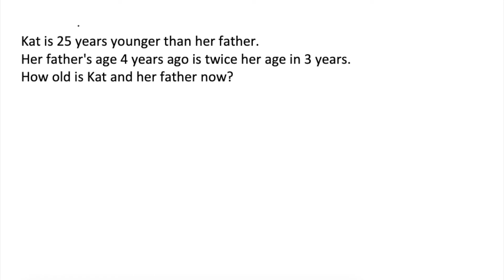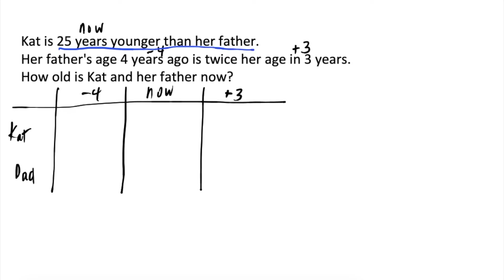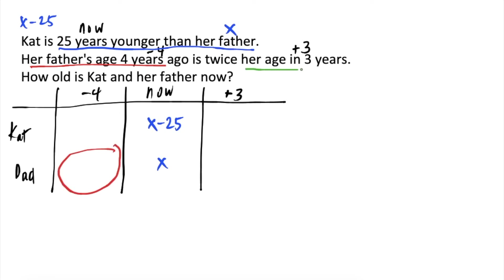Kat is 25 years younger than her father. Her father's age 4 years ago is twice her age in 3 years. How old is Kat and her father now? So, concerned tayo sa present age nilang dalawa, 4 years ago or negative 4, and their ages in 3 years or positive 3. Gawa muna tayo ng table. Let's say ang age ng dad is x. Since Kat is 25 years younger than her father, Kat's age should be x minus 25. Her father's age 4 years ago — sa negative 4 na column, concerned lang tayo sa age ni father. Pagdating naman sa positive 3 column, concerned lang tayo sa age ni Kat. Since yung edad ni Kat now is x minus 25, her age in 3 years should be x minus 25 plus 3, which is equal to x minus 22. Ang age naman ni father now is x. So, 4 years ago, it should be x minus 4.